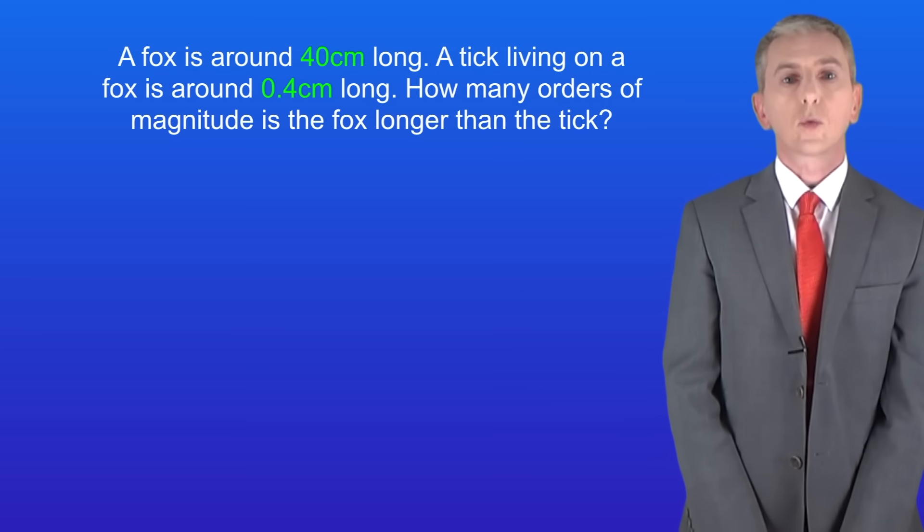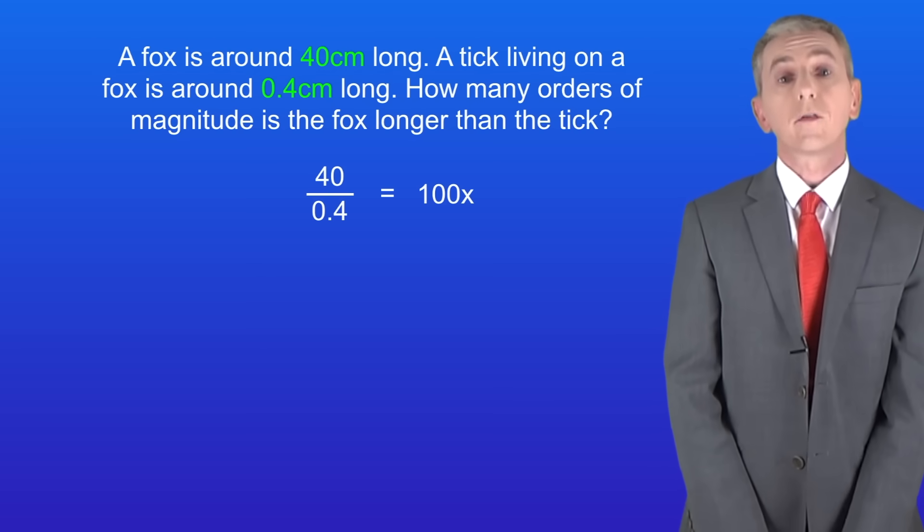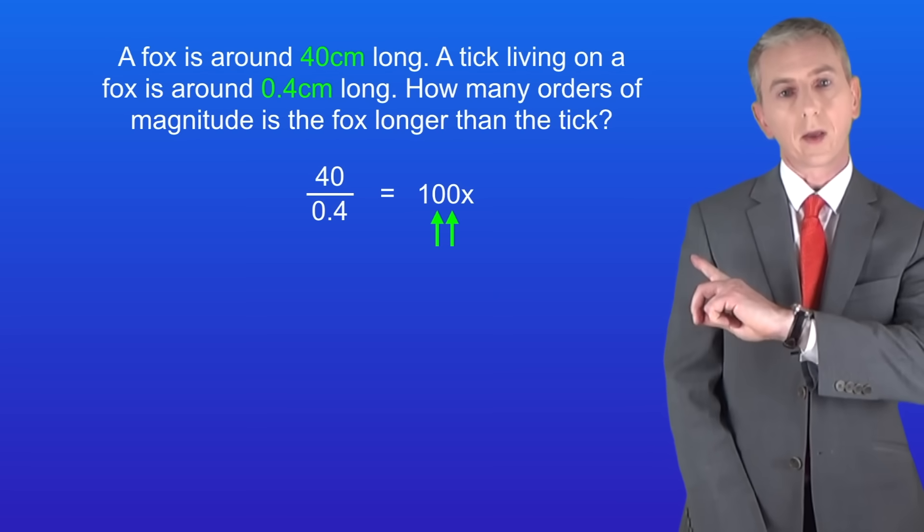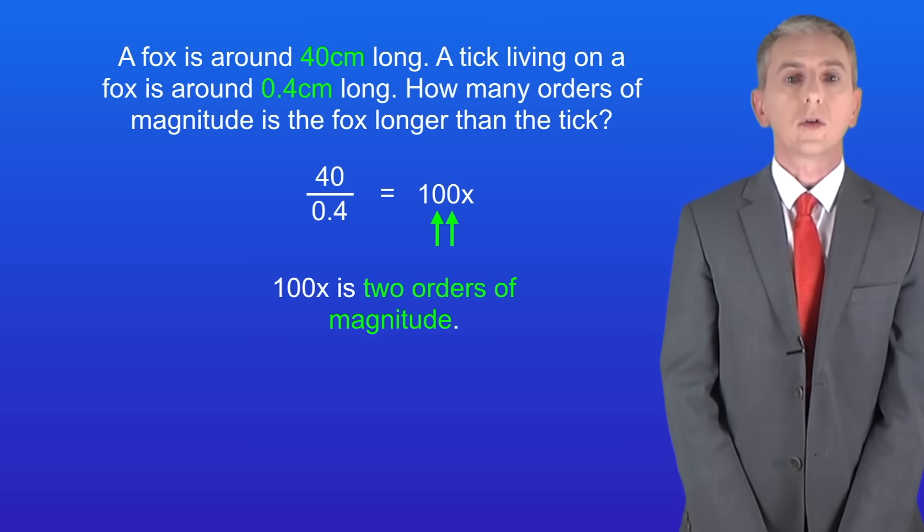Okay, so the first stage is to work out how many times longer the fox is than the tick. If we divide 40 by 0.4 we can see that the fox is 100 times longer. As I said before, we can work out the order of magnitude by counting the zeros. We've got two zeros and here they are. So that means the fox is two orders of magnitude longer than the tick.